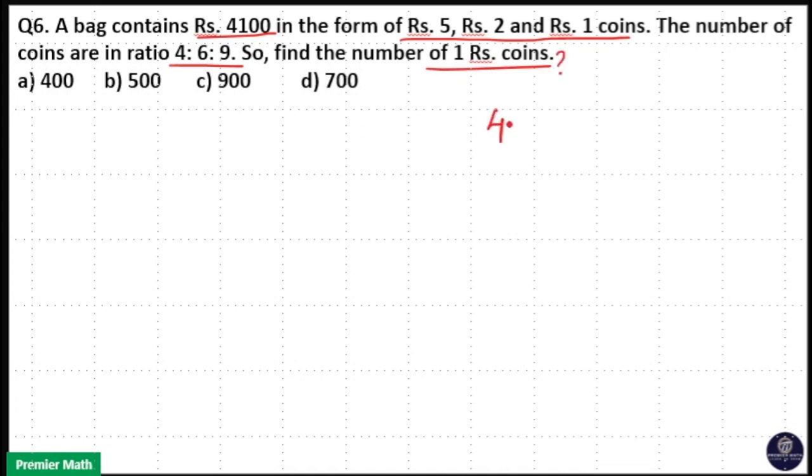So we have total Rs. 4100 here. And we have 5 rupee, 2 rupee and 1 rupee coins here. This is value. And these coins are in the ratio 4 is to 6 is to 9. That is, this is number of coins.